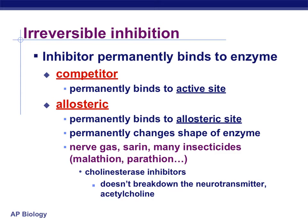A neurotransmitter called acetylcholine is needed to continue the passage of nerve impulses from one neuron across a synapse to the next neuron. Once the impulse has been transmitted, a specific enzyme called acetylcholinesterase functions to deactivate the acetylcholine almost immediately. If this enzyme is inhibited, acetylcholine accumulates and the nerve impulse can't be stopped, causing prolonged muscle contraction. Eventually, paralysis could occur, and even death, if respiratory muscles are affected.